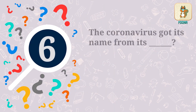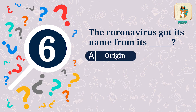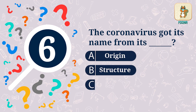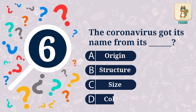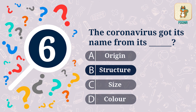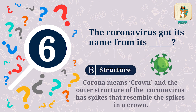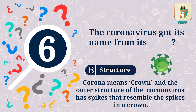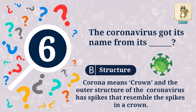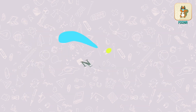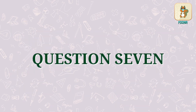Question 6. The coronavirus got its name from its origin, structure, size, or colour? The answer is structure. Corona means crown, and the outer structure of the coronavirus has spikes that resemble the spikes in a crown.